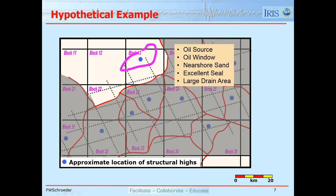Teams would work on this data. For example, they might examine an area with a structural culmination — an anticline. If this area had the source in the oil window, near-shore sands as the best reservoir quality, an excellent top seal, and a large drainage area, then that anticline would be a very good candidate to place a lot of money on. This is hypothetical — block 13 doesn't actually have all these characteristics; it's just for illustration.